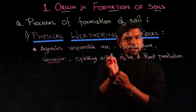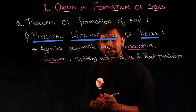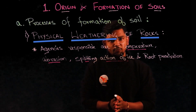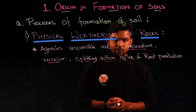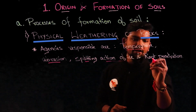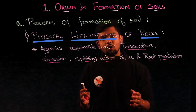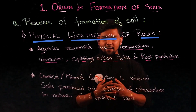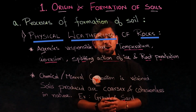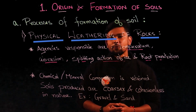Next is abrasion — a physical force in terms of rubbing or scraping caused by moving wind, water, or glacier. Next is the splitting or wedging action of ice, which refers to the abnormal behavior of water expanding its volume when it freezes. Water inside micro-cracks expands when it freezes, leading to the development of larger cracks. The last agency of physical weathering is root penetration of plants and trees into the exposed surface of the rock. In physical weathering, the chemical or mineral composition of the soil formed is the same as that of the parent rock. It produces coarser, cohesionless soil material. Examples include gravel and sand.